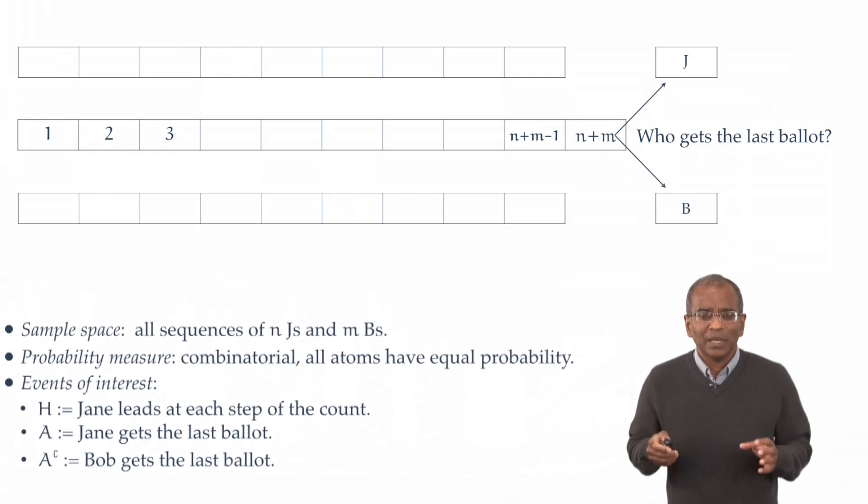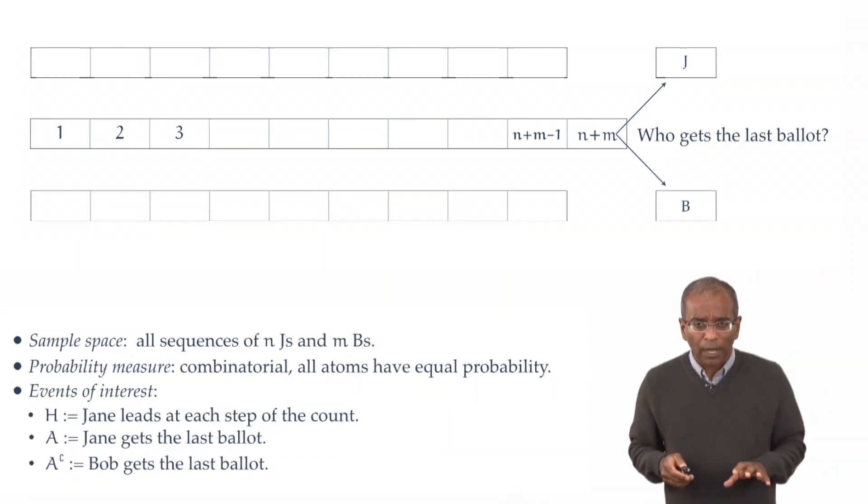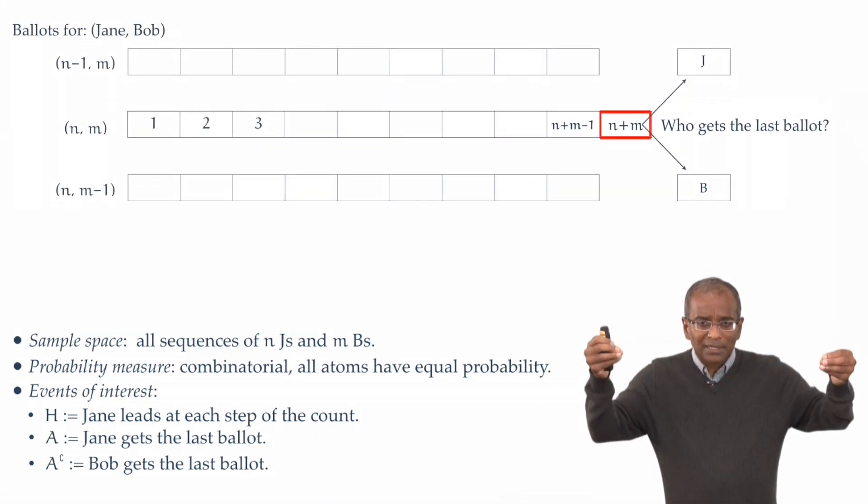We are now in place to put together some early calculations. Let's take a look at the pictures we have developed so far. To begin, we have n plus m ballots. n go to Jane, m go to Bob.